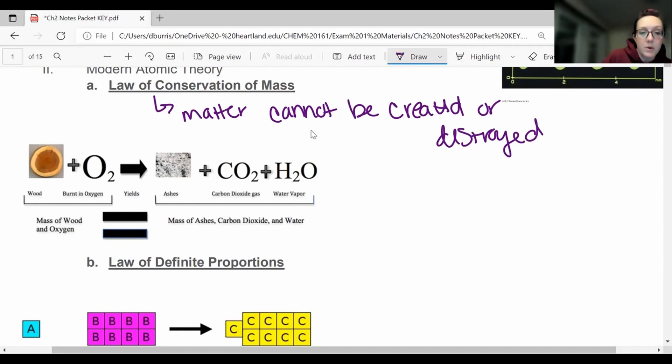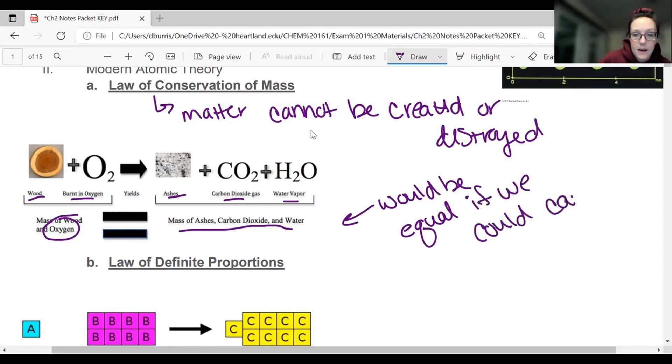So this is just an example here. When wood burns, right? Wood burns and it uses oxygen. And then we end up with ashes, carbon dioxide gas, and water vapor. Okay, and the mass of the oxygen used in the wood will equal the mass of the ashes, carbon dioxide, and water. Now this is really hard to do because we would have to actually capture all of the gases being produced. We would have to know how much oxygen was used to burn. But these would be equal, would be equal, if we could capture everything. We could capture, okay? So keep that in mind when we start doing math and stoichiometry. It's going to be important that the law of conservation of mass comes into play.